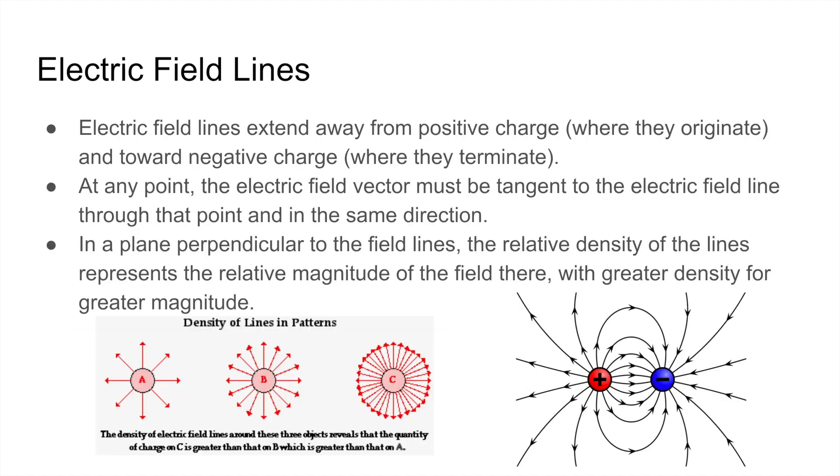One big conceptual topic in electric fields are electric field lines. Electric field lines extend away from positive charges, where they come from, and go towards negative charges, where they go into. If we only have one positive charge, we can imagine it as a negative charge at infinity, and we can imagine all the electric field lines ending at that infinitely far negative charge, and similarly for negative charges as well. At any point, the electric field vector must be tangent to the electric field line through that point and in the same direction.